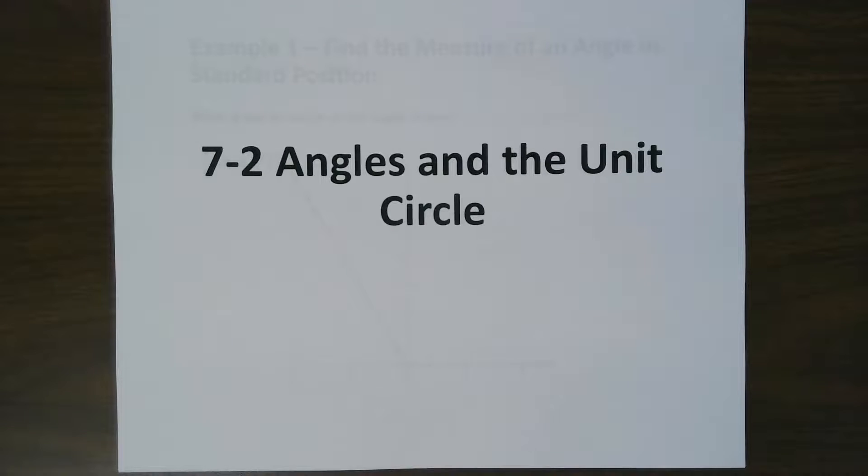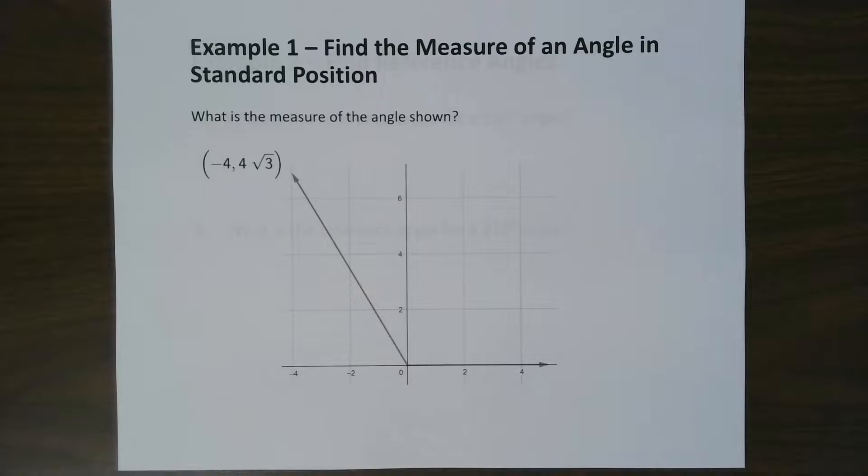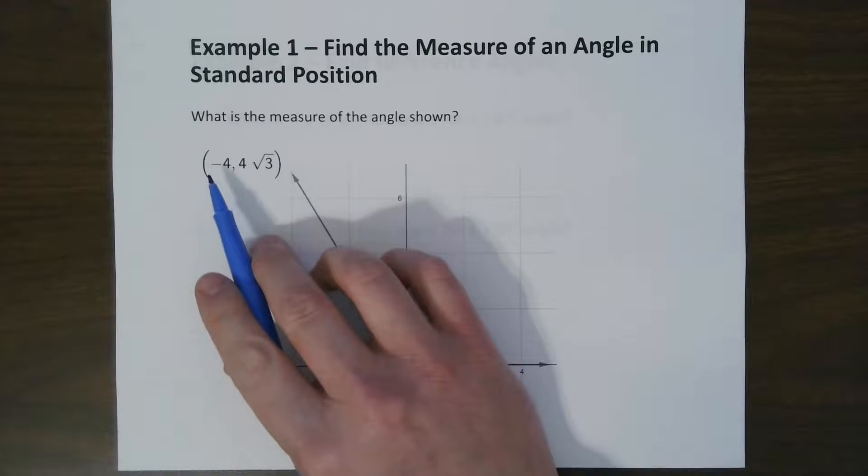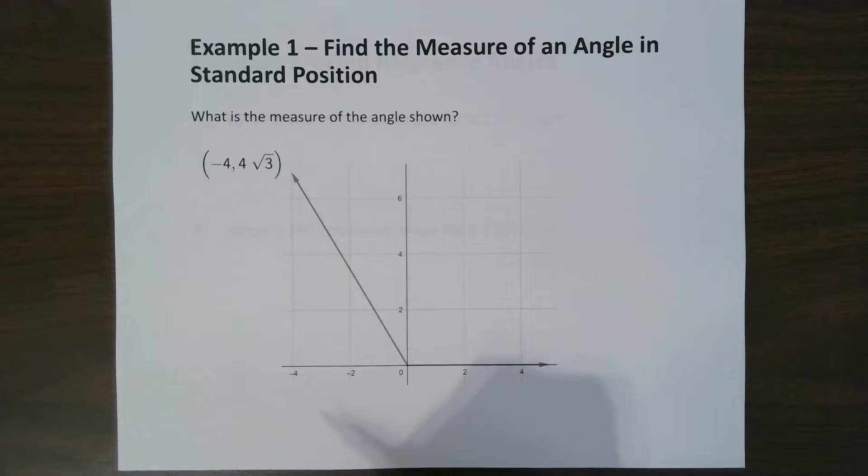Hi, today we're going to be talking about angles and the unit circle. So let's take a look at this problem right here. This is a graph with a point at negative 4 and 4 radical 3.